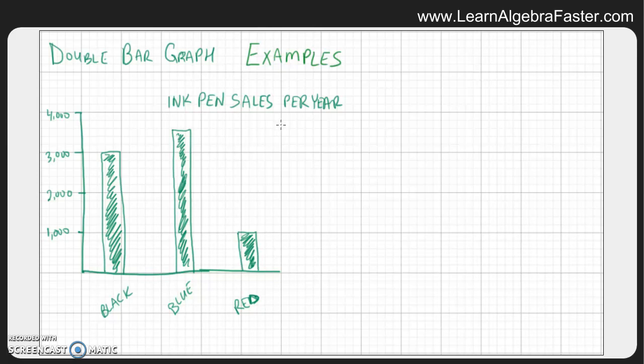We have the title. That's important. We have the vertical axis. That's the up and down axis and that's what we have our numbers measured on. We have the horizontal axis, which is our groups. And in this case, we're saying it's the color of the ink pen that we're selling.